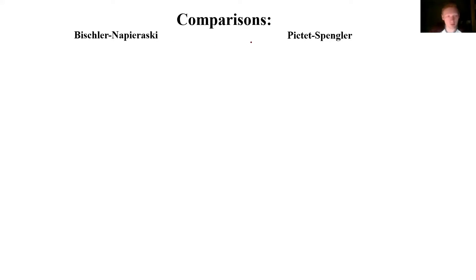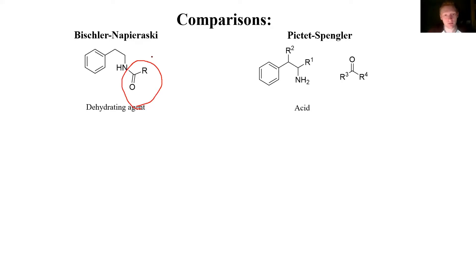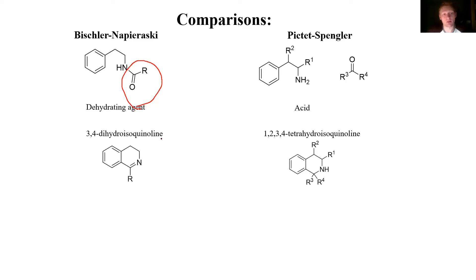To compare these two name reactions, let's look at a few different things. First, the starting materials: the Bischler-Napieralski starts with an acylated beta-arylethylamine, whereas the Pictet-Spengler uses the normal beta-arylethylamine. So if you see an acyl group on the nitrogen with a beta-ethyl, odds are it's the Bischler-Napieralski; if you don't have an acyl group, it might be a Pictet-Spengler. Additionally, the Bischler-Napieralski occurs with a dehydrating agent — if you see that reagent, odds are it's that reaction; otherwise, acidic conditions indicate Pictet-Spengler. As for products, the Bischler-Napieralski makes the 3,4-dihydroisoquinoline — you'll still have this double bond — whereas the Pictet-Spengler makes the 1,2,3,4-tetrahydro, so there are no double bonds.